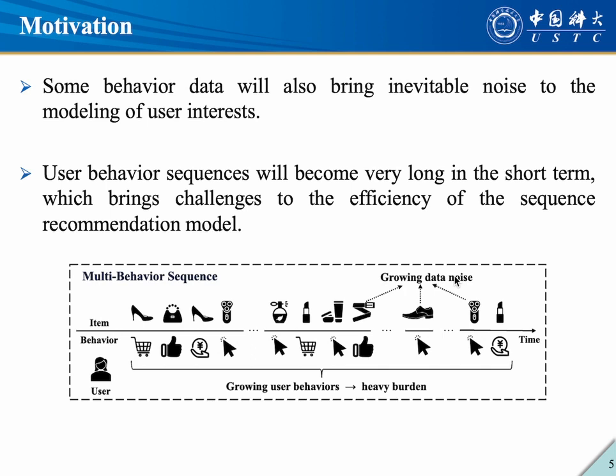Although the incorporation of multi-behaviour information can further effectively explore user behaviour patterns, some behaviour data will also bring inevitable noise to the modelling of user interests. For example, as shown in the figure, a woman may have mistakenly clicked on a man's shoe. These noise behaviours bring challenges to the representation of the user's interest. Meanwhile, with diversified behaviour data, user behaviour sequences will become very long in the short term, which brings challenges to the efficiency of the sequence recommendation model.